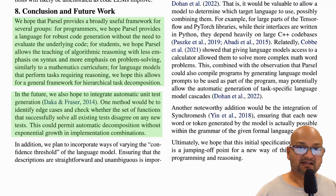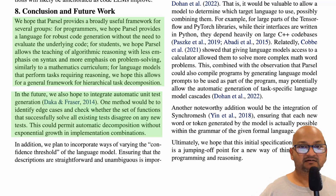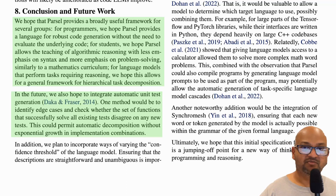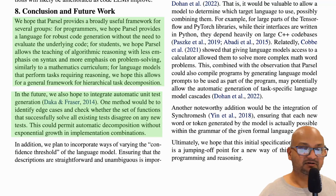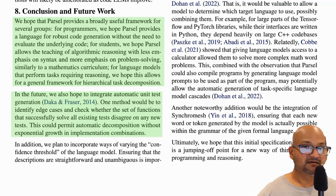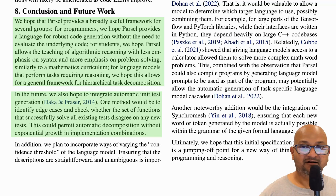So that was a look at Parcel, which tries to enhance the code generation capabilities of large language models by mimicking the way humans think about problems — decomposing them into smaller problems and perhaps having a few input-output examples to help guide their thinking. Links to the paper are going to be in the description. I hope you enjoyed that, and I will see you next time. Thank you very much.